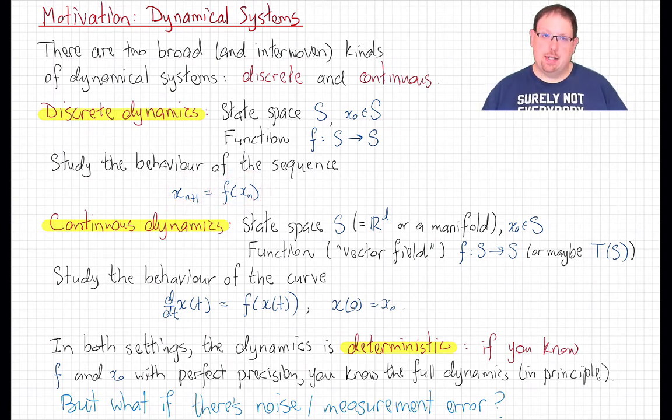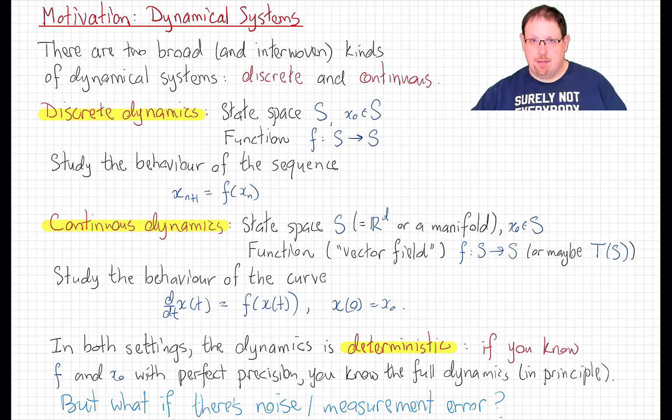So you start at X0, and then you apply F to get F(X0), that's X1. Then X2 is F(X1), which is F(F(X0)). In other words, discrete dynamics is the understanding of arbitrary compositions of functions with themselves on a state space S.